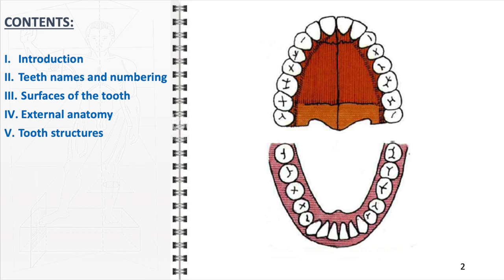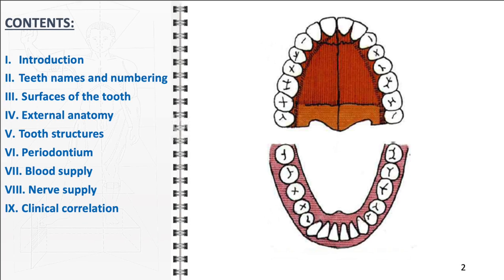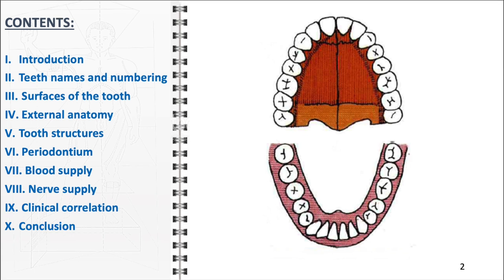Following this, we'll turn our attention to the periodontium, the supporting structure of the teeth, uncovering its critical role in dental health. We'll then examine the blood and nerve supply to the teeth. We'll discuss clinical correlations, linking our anatomical knowledge to practical dental scenarios. Finally, we'll wrap up with a comprehensive summary, ensuring you take away key insights into dental anatomy.